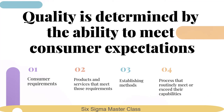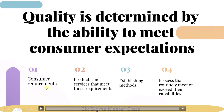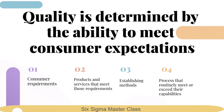Four actions lead to this outcome: taking into consideration consumer requirements; the process of developing products and services that meet those requirements; establishing methods that will enable such goods and services to be produced; and controlling and managing those processes so that they routinely meet or exceed their capabilities.